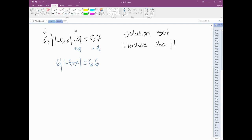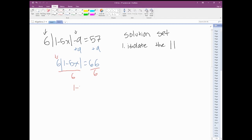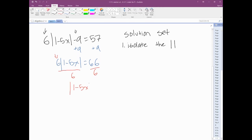The next thing we need to do, we're still trying to isolate the absolute value, get rid of the 6. Since this is 6 times the absolute value, we're going to undo that by dividing. We end up with 1 minus 5x in absolute value equals 11. This is all the first step of isolating the absolute value.